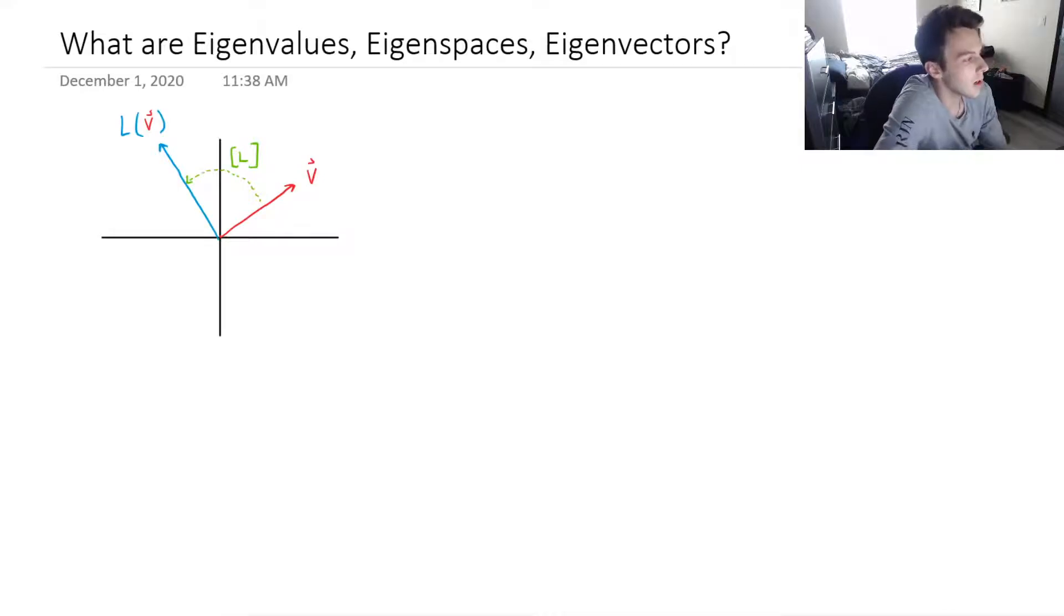So when we think of linear transformations, we think of it as moving a vector in space when we apply that linear transformation. So an eigenvector is just a special vector that has a unique behavior when we apply a linear transformation. And that behavior is that when we apply that linear transformation, we're going to stay on the same line that the initial vector spans.